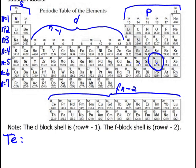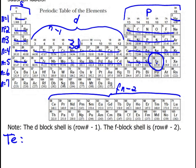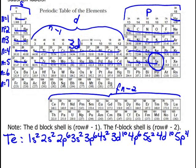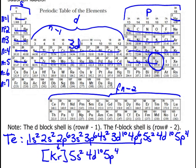Alright. 1S2, 2S2, 2P6, 3S2, 3P6, 4S2, 3D, this is 3D10, 4, back to 4, P6, 5S2, 4D10, 5P4. Yay! Or, just write krypton and there you go.